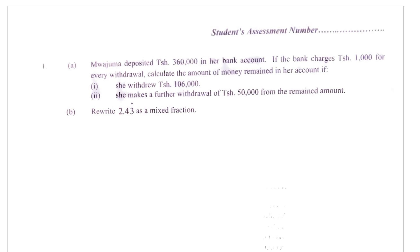Here is question number one. Majuma deposited 360,000 shillings in her bank account. If the bank charges 1,000 shillings for every withdrawal, calculate the amount of money remained in her account if she withdraws 160,000 shillings. So basically, for part one, the amount withdrawn...